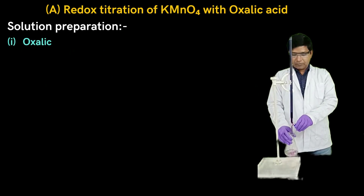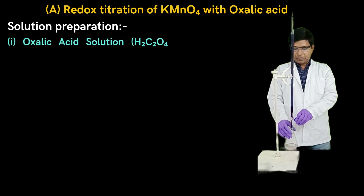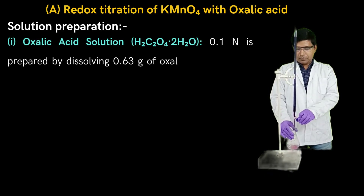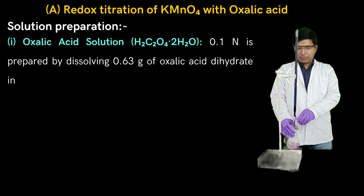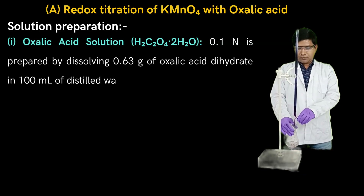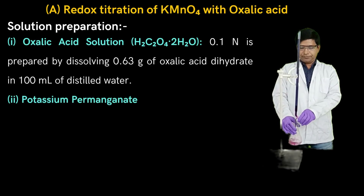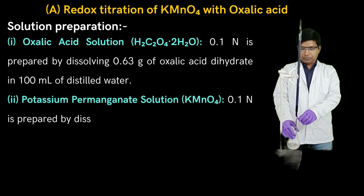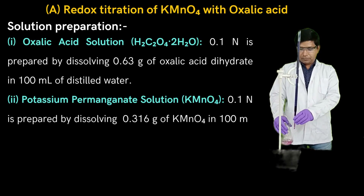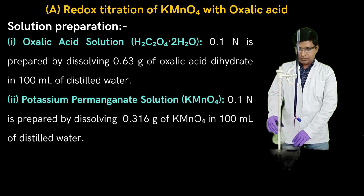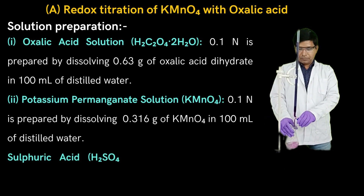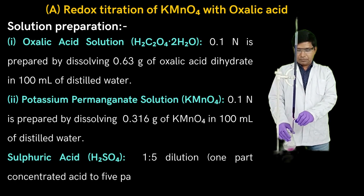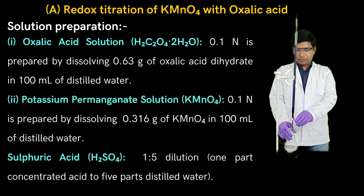Here we know the solutions required for this titration. First, oxalic acid solution of 0.1 Normal is prepared by dissolving 6.3 g of oxalic acid dihydrate in 100 ml of distilled water. Second, potassium permanganate solution of 0.1 Normal is prepared by dissolving 0.316 g of KMnO4 in 100 ml of distilled water. Third, sulfuric acid in 1:5 dilution — 1 part concentrated acid to 5 parts distilled water.